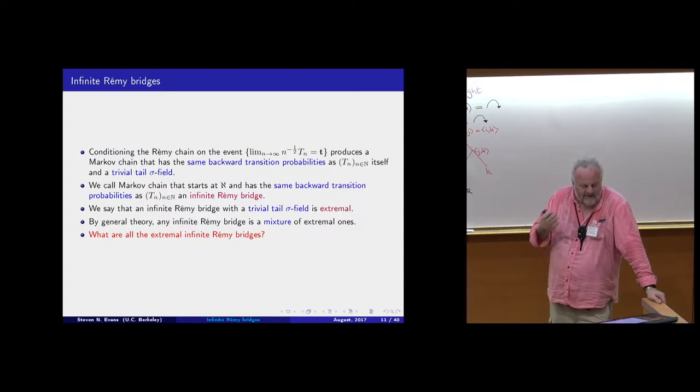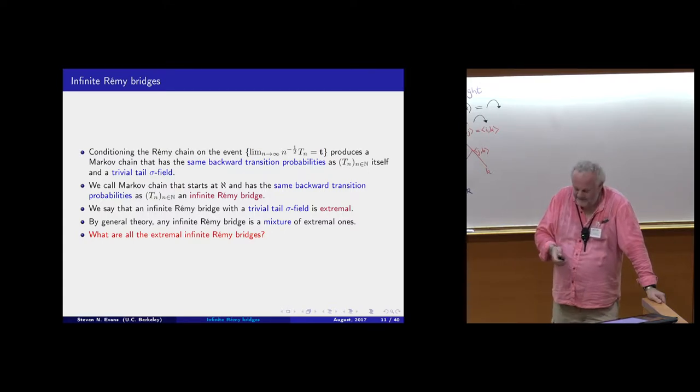The name we'll give to infinite Rémy bridges with trivial tail sigma-fields is 'extremal'. By general theory, any infinite Rémy bridge is a mixture of extremal ones — these are the extreme points in the convex set of infinite Rémy bridge distributions. The goal for us today is to understand what all the extremal infinite Rémy bridges are.